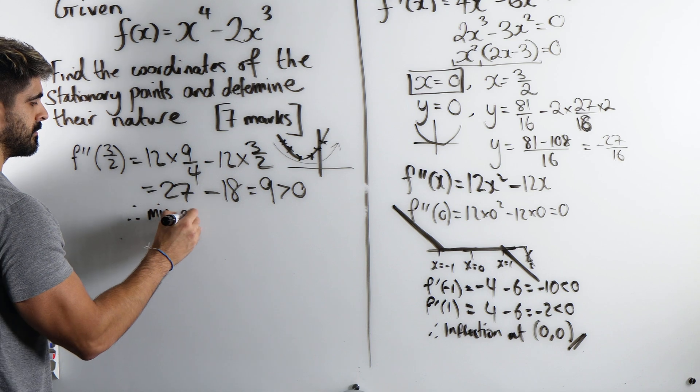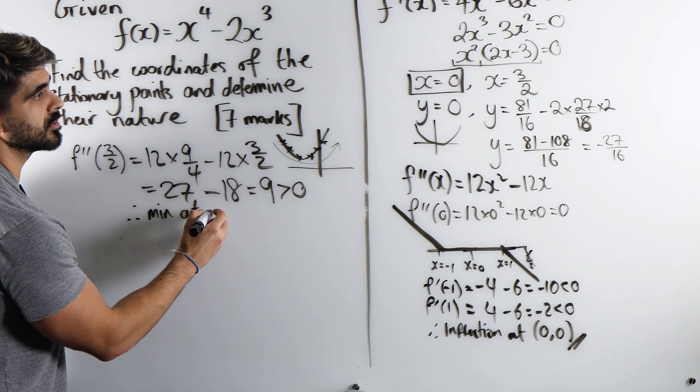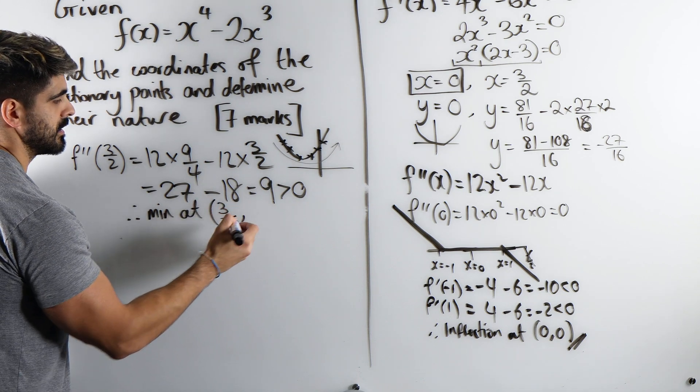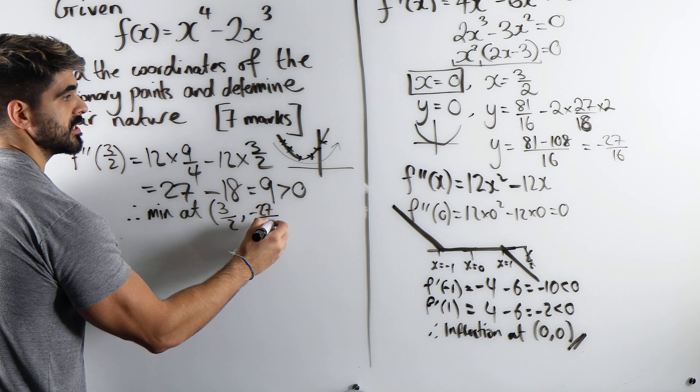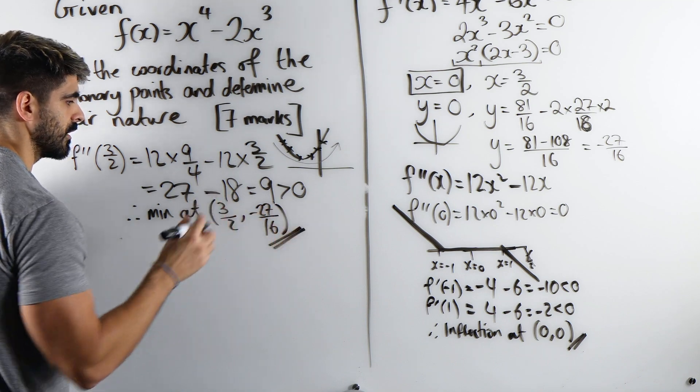Therefore, it's a minimum at, what is it? 3 over 2. And what was the y value? Minus 27 over 16.